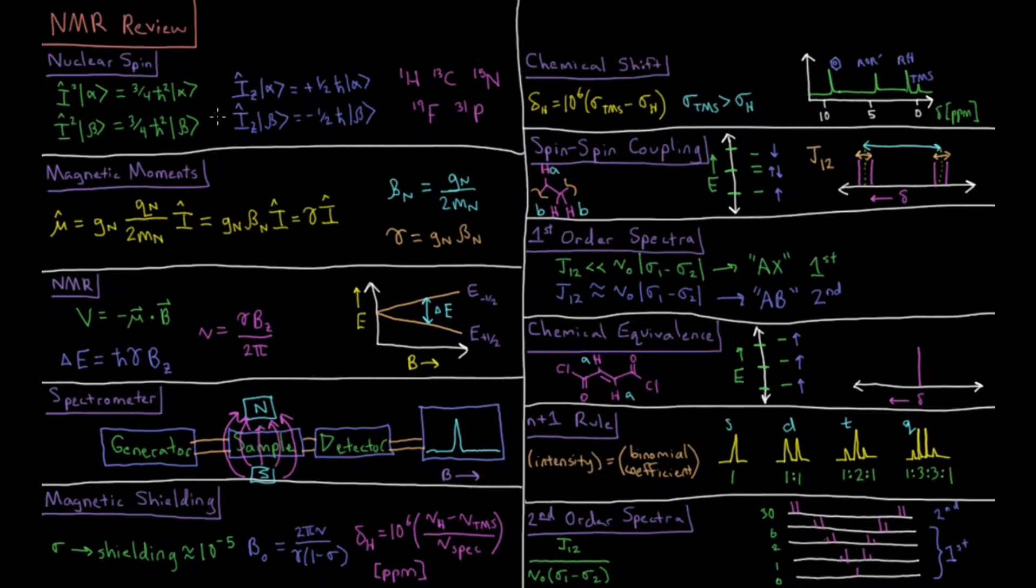Nuclei which have non-zero values of spin that are of particular interest for NMR are hydrogen 1, carbon 13, and less common but also done quite frequently in the chemical community, nitrogen 15, fluorine 19, and phosphorus 31.